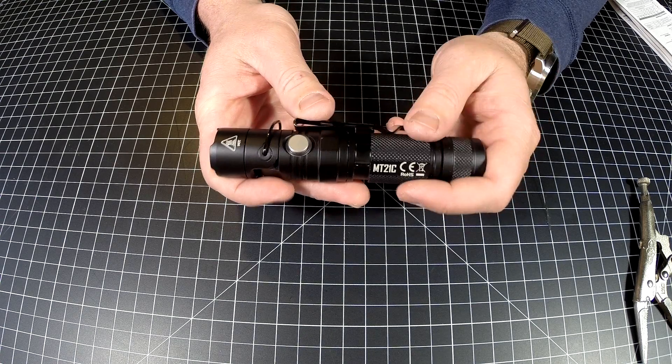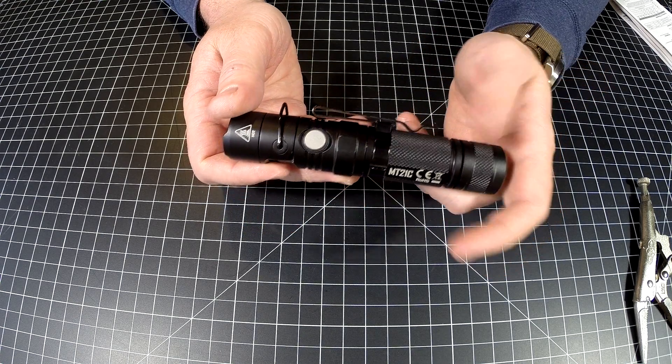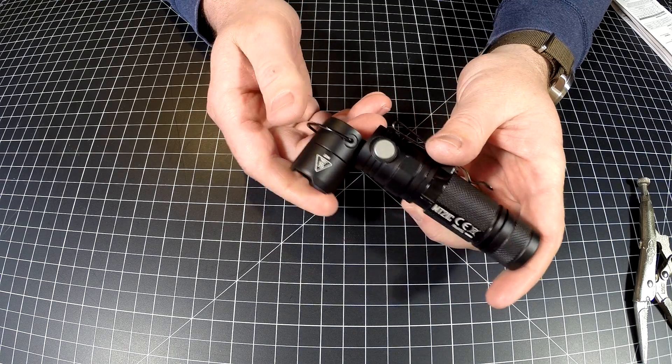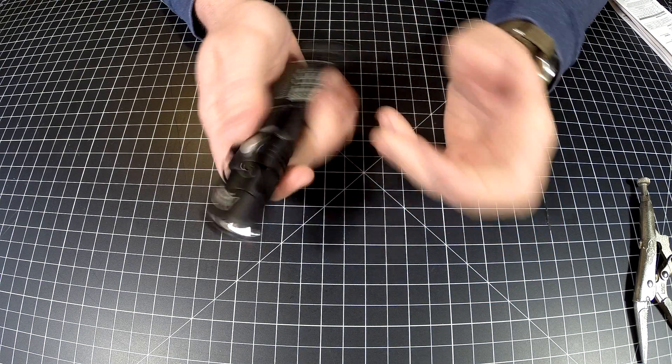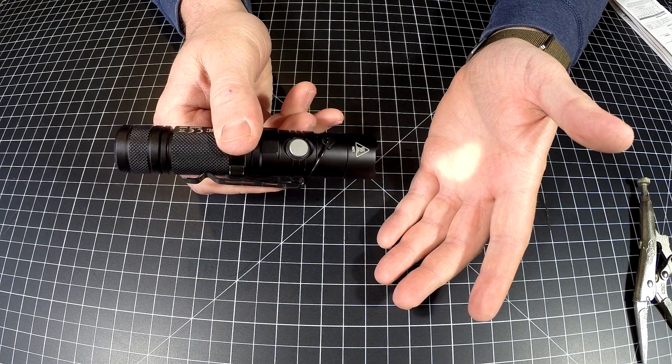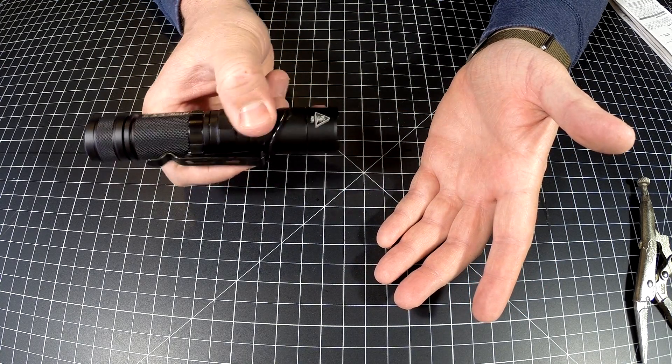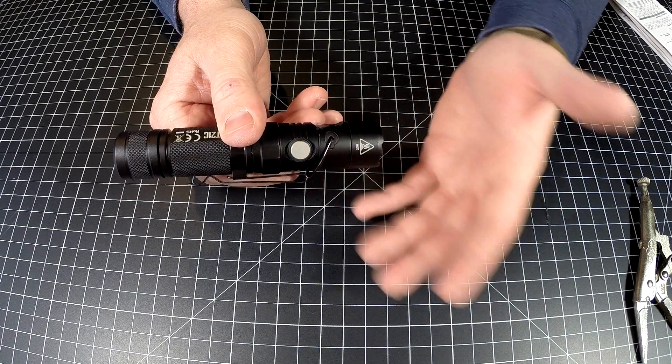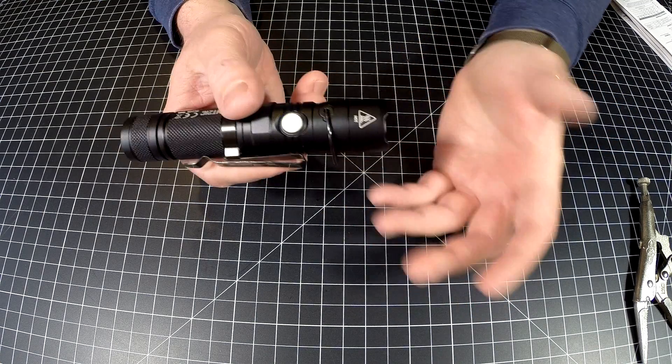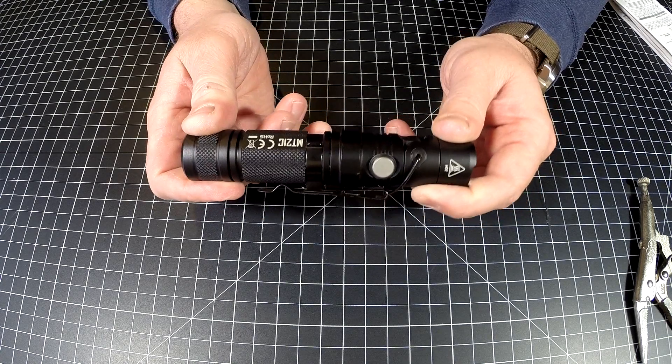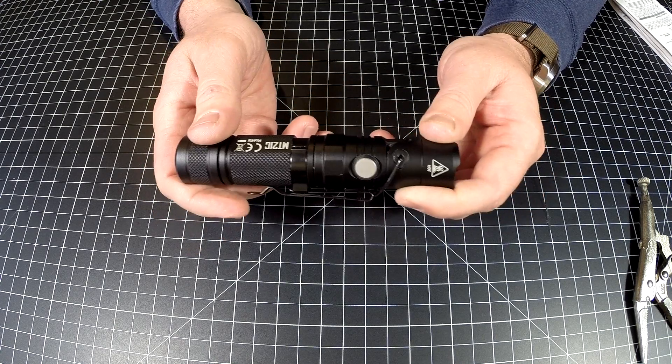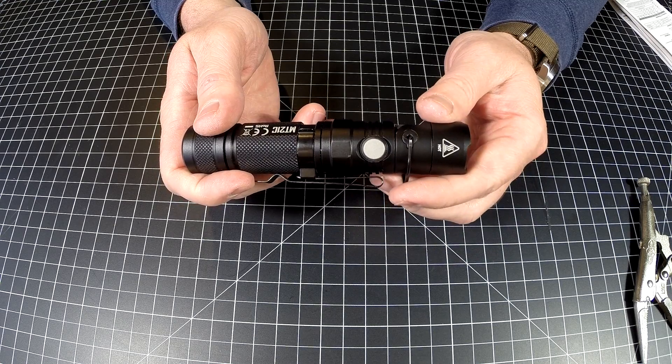If you're thinking about buying one for everyday carry, I probably wouldn't recommend it. When you throw it in your pocket, the head tilts. You have to push and hold to turn it on instead of just a quick tap. A quick tap shows you the battery level. There are better EDC lights, but for a work light, this thing is awesome.